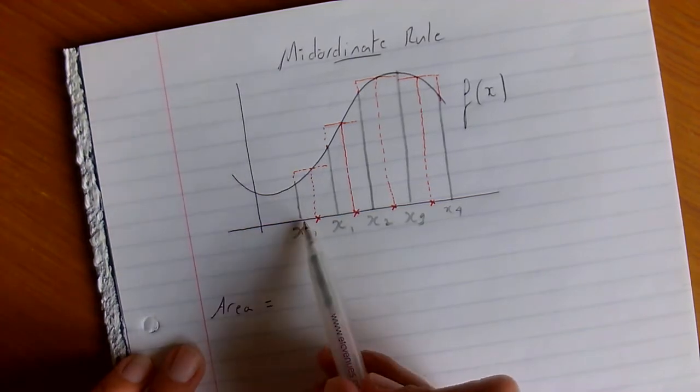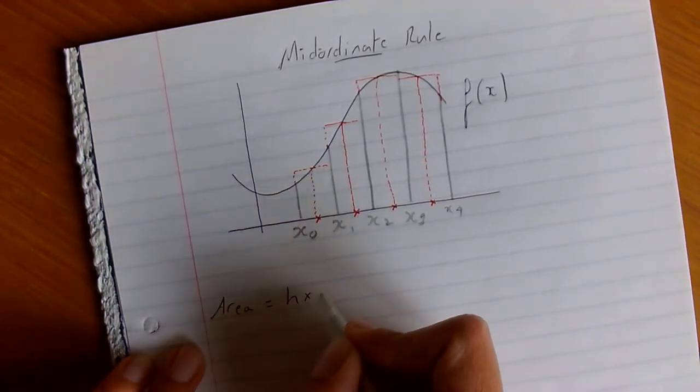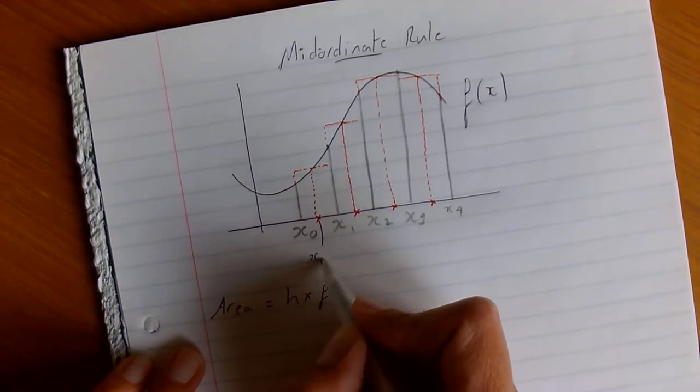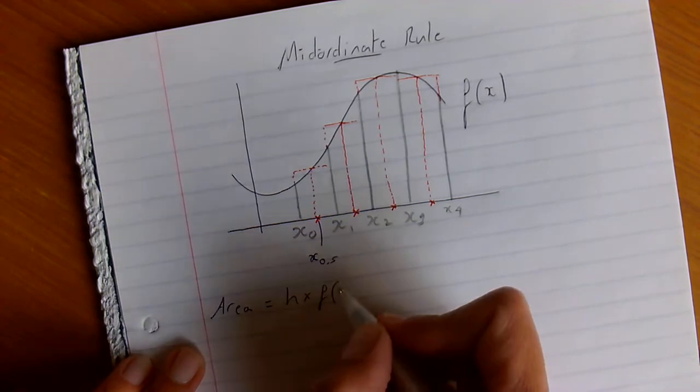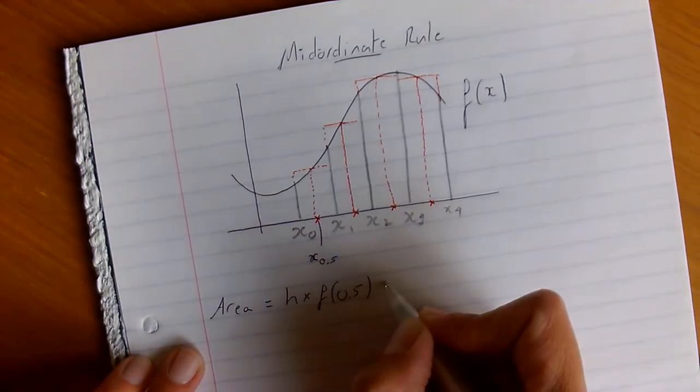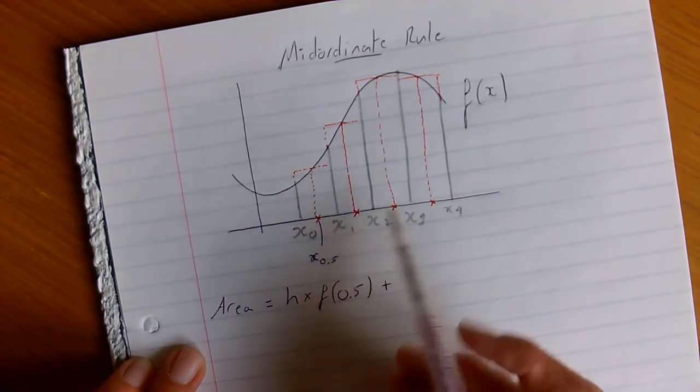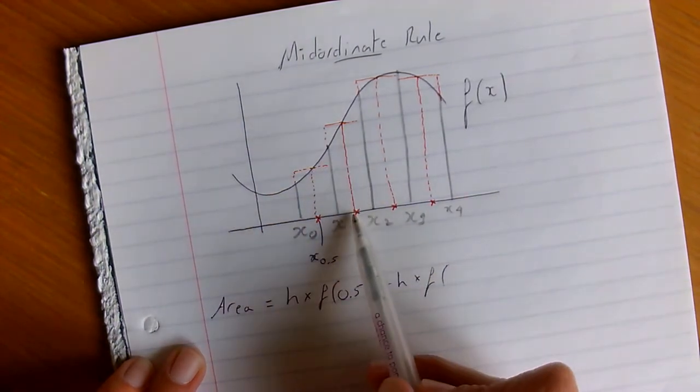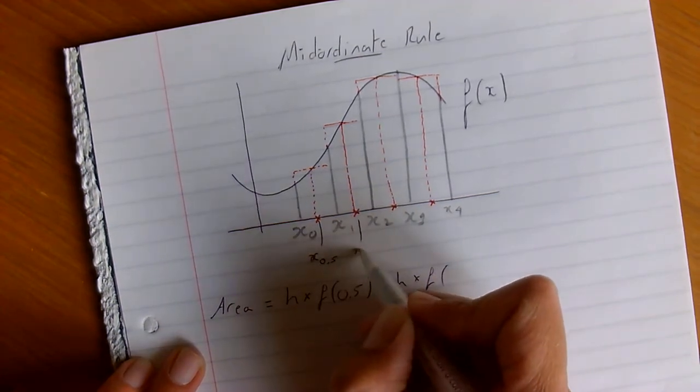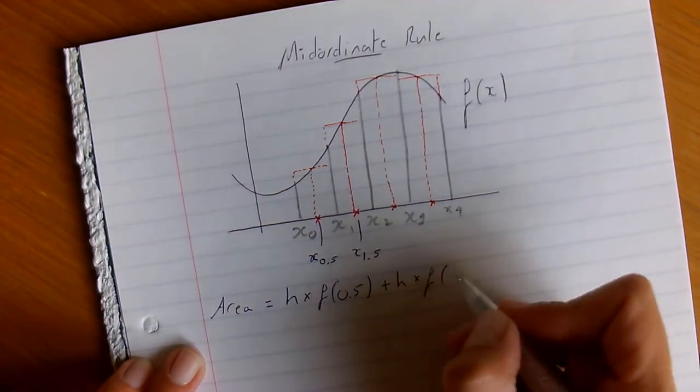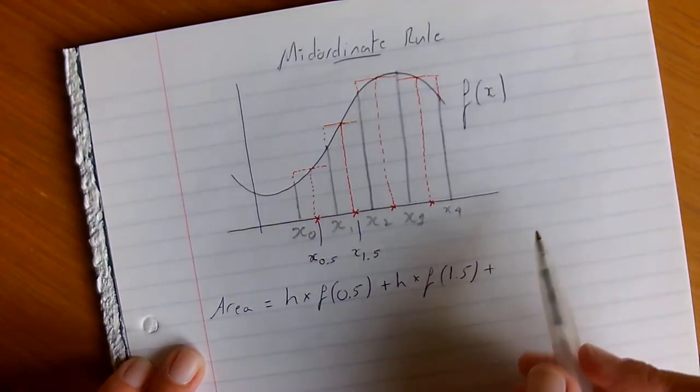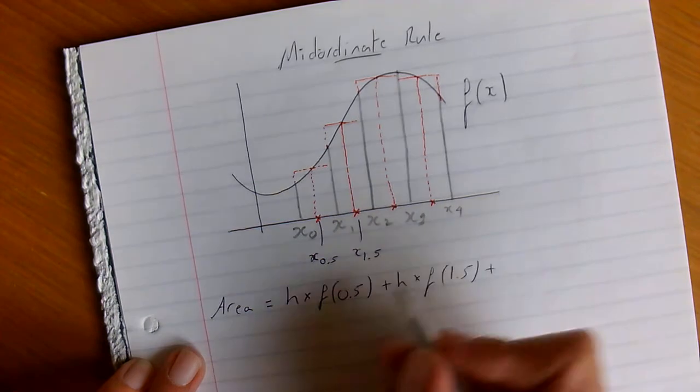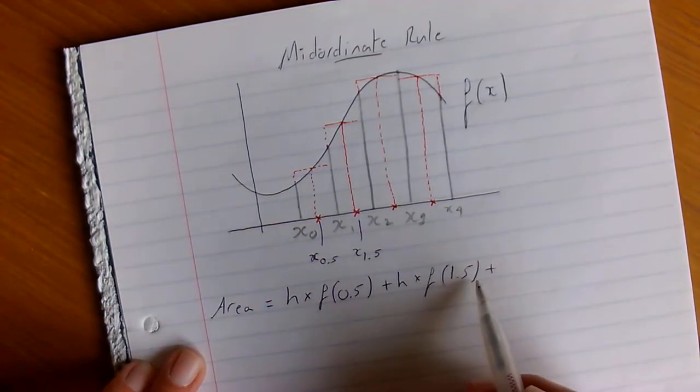We have got a height here times by whatever the function is at this ordinate here, which is x0.5. And then plus, we have this height here times by the function of, obviously this height here, this one here is a 1.5. This is x1.5, you might see it written as a fraction. And so on, the height times by the function at the value of x when it's 2.5 and 3.5. But let's relabel this because obviously I'm not going to be putting 0.5 and 1.5 and so on.